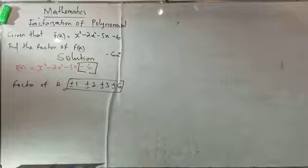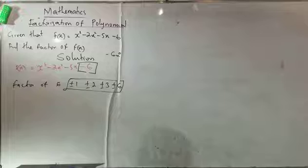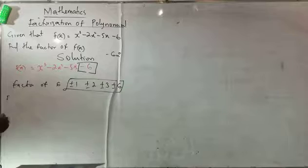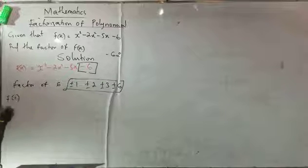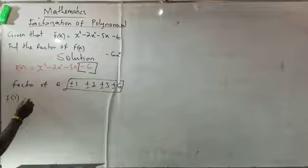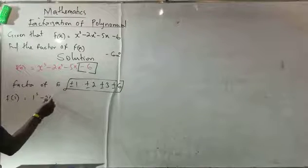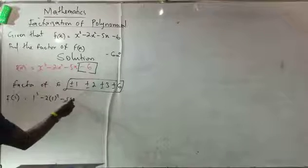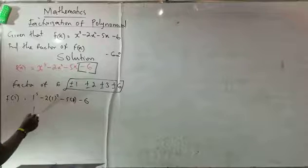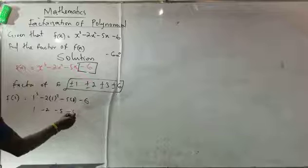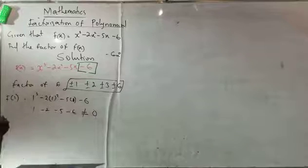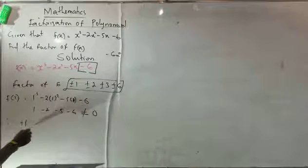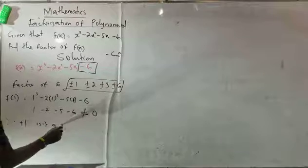If I want to do it very well, I will just look out for—for instance, if I start from f(1), I will come here by saying 1 cube minus 2 bracket of 1 squared minus 5 bracket of 1 minus 6. This is going to be 1 minus 2 minus 5 minus 6. This can never be equal to 0.